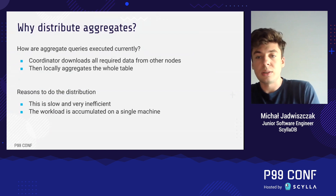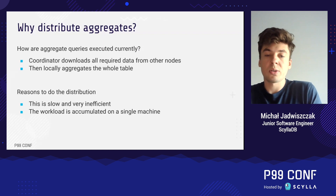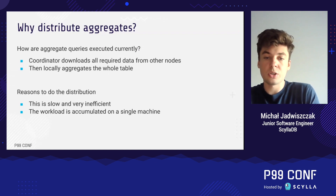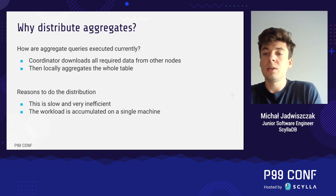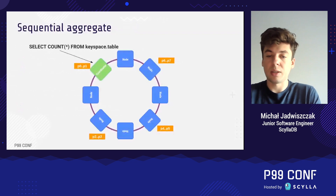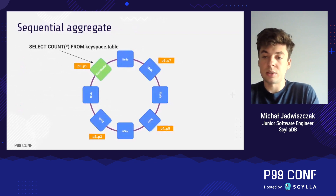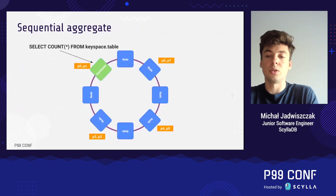So why do we even want to distribute an aggregate query? The current implementation executes aggregates by first downloading the whole dataset to the coordinator node. This requires all participating nodes to send data to the coordinator via the network, which generates a lot of traffic at the same time. When the coordinator gathers all required rows, it needs to calculate the result of the whole table alone. This makes the query slow, generates unnecessary network traffic, and inefficiently uses the cluster.